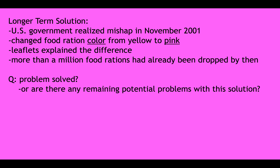That was a short-term solution. A longer-term solution — probably more effective — came when the government recognized the mishap. In November 2001 they changed the food ration color from yellow to pink, and combined that with the leaflets to explain the difference. Unfortunately, by that point over a million food rations had already been dropped, leaving people reluctant to retrieve them for fear they could be cluster bombs.